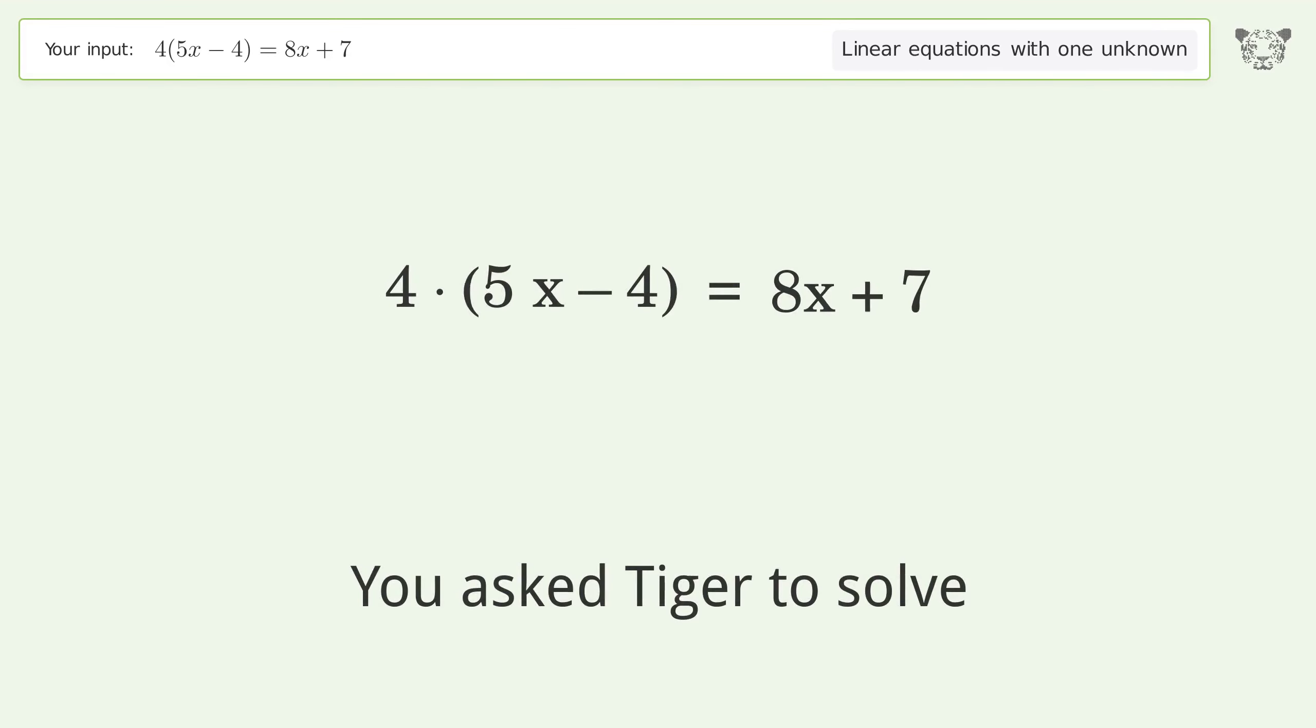You asked Tiger to solve this problem dealing with linear equations with one unknown. The final result is x equals 23 over 12.